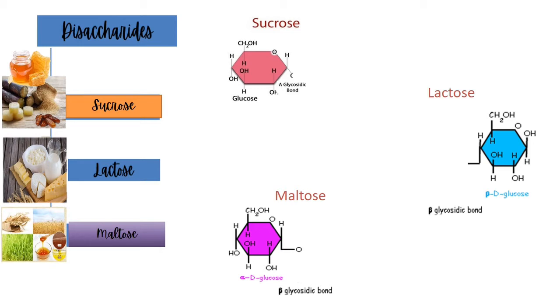Sucrose is that white stuff that we mix to sweeten our drinks. This is a common sugar or table sugar. Sucrose is made from glucose being combined with fructose, and they are connected together by an alpha glycosidic bond.